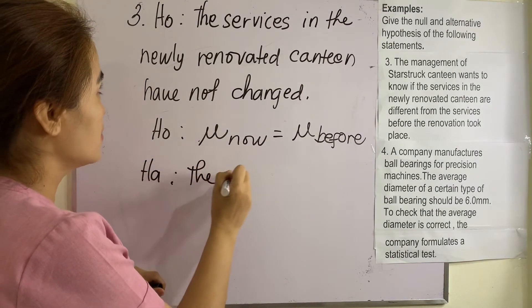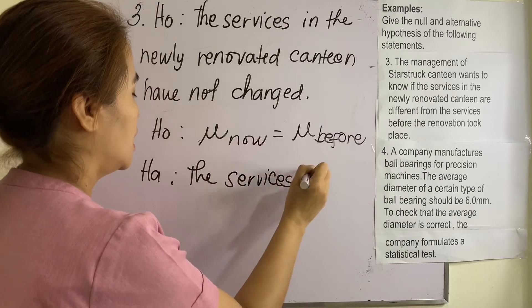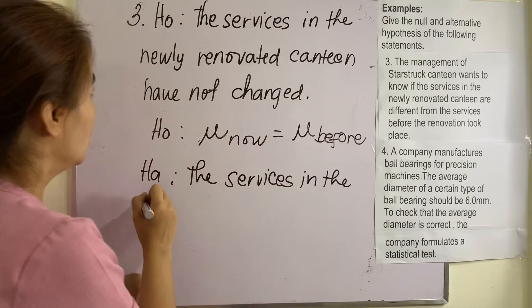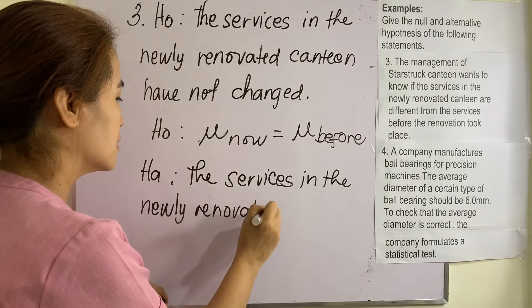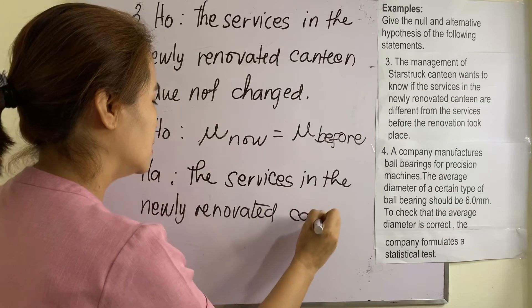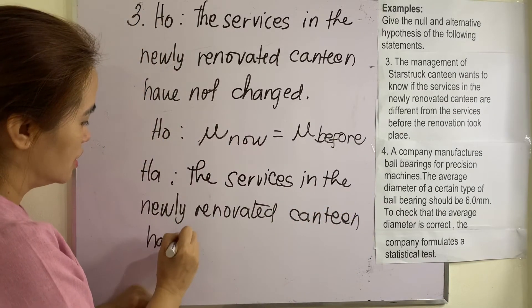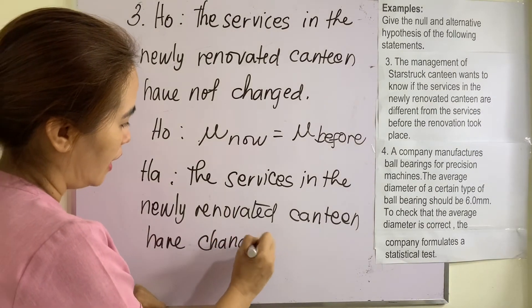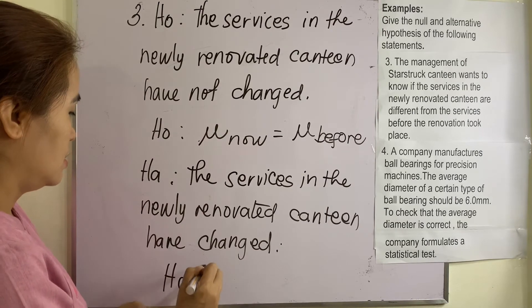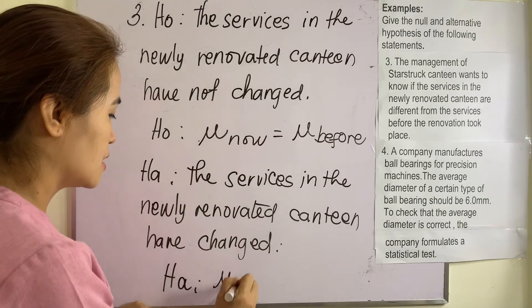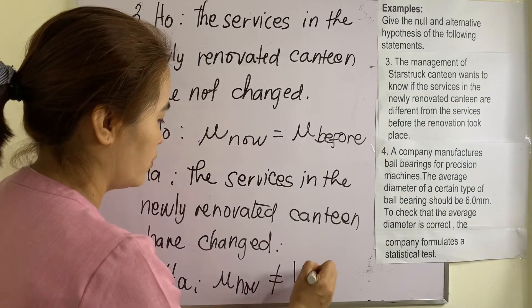For the alternative hypothesis, we have: the services in the newly renovated canteen have changed. In symbol, mu-now is not equal to mu-before.